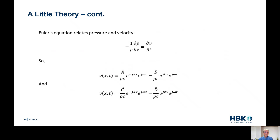There are similar equations for the acoustic velocity — not the steady-state velocity of air moving through the tube, but the back-and-forth vibratory sound velocity. It's similar to the pressure with a few changes: amplitude A is divided by rho C, the impedance of air. And instead of a plus sign, because of the way the Euler equation — the F equals MA for air — works out, it has a negative sign for the left-traveling wave, with a similar form on the right side of the sample.